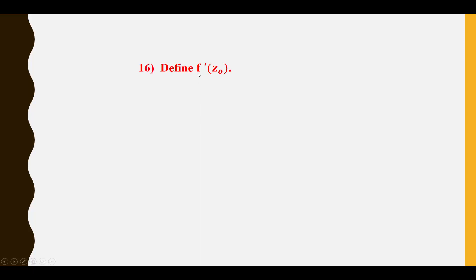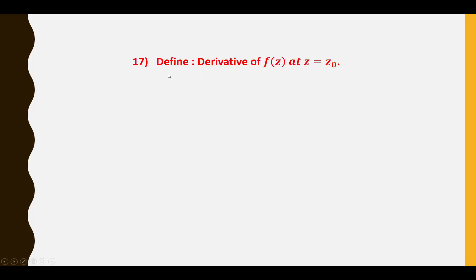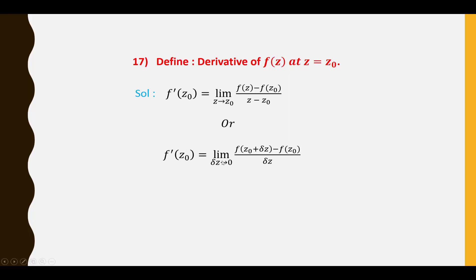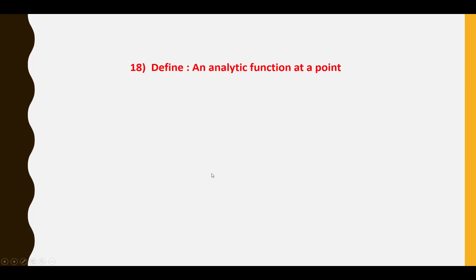Sixteenth and seventeenth questions: Define F'(Z₀). F'(Z₀) = lim(ΔZ→0) [F(Z₀ + ΔZ) − F(Z₀)] / ΔZ. Alternatively, F'(Z₀) = lim(Z→Z₀) [F(Z) − F(Z₀)] / (Z − Z₀).